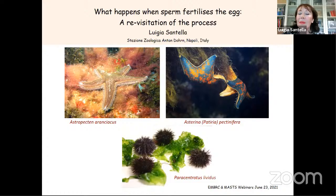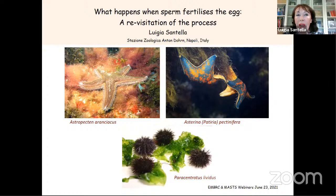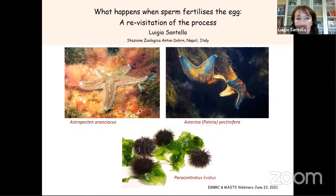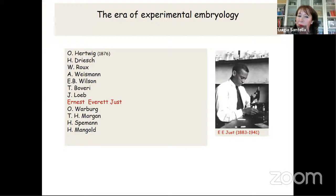It is possible to reproduce in the lab what happens at sea. We can have large quantities of oocytes and eggs. Importantly, they are very transparent and large in size so that they are extremely suitable for imaging studies. In the lab, we can fertilize them in natural seawater, we can use altered sea water, we can change the pH and salinity, and then we can study the effect of environmental changes on the fertilization response and development. This is extremely useful and important.